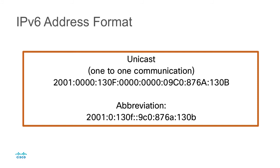First, we can leave off the leading zeros in a field. In this example, we have 2001 colon 0 — we know to fill that in until it's a 16-bit field with zeros — colon 130F. Then we use the double colon to fill in those all-zero fields with zeros, which you can see from the original address makes sense. Then we continue with 9C0, where we've left the leading zero out, and that's fine because the double colon tells the protocol how to expand it properly. The next fields are 876A colon 130B.